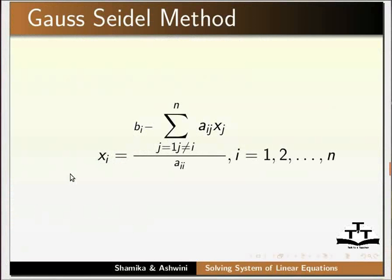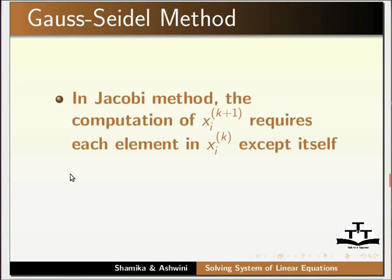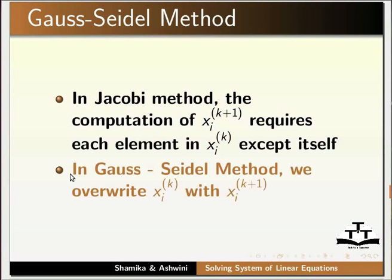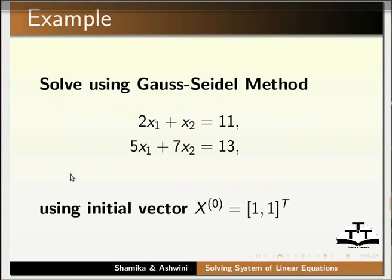Let us now study Gauss-Seidel method. Given a system of linear equations with n equations and n unknowns, we rewrite the equations for each unknown by subtracting the other variables and their coefficients from the corresponding right-hand side element, then divide by the coefficient A_ii of the unknown variable. In Jacobi method, for the computation of x(i, k+1), every element of x^k is used. In Gauss-Seidel method, we overwrite the value of x(i,k) with x(i, k+1).